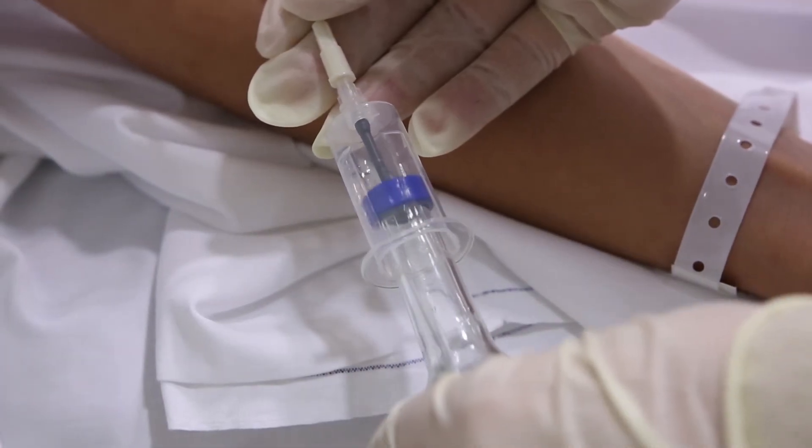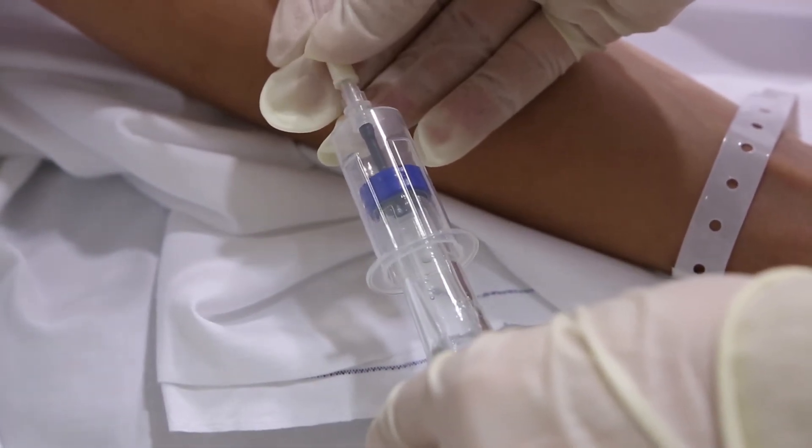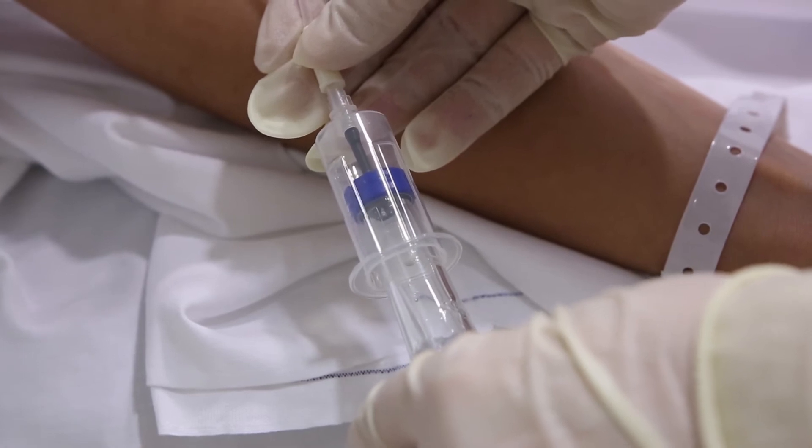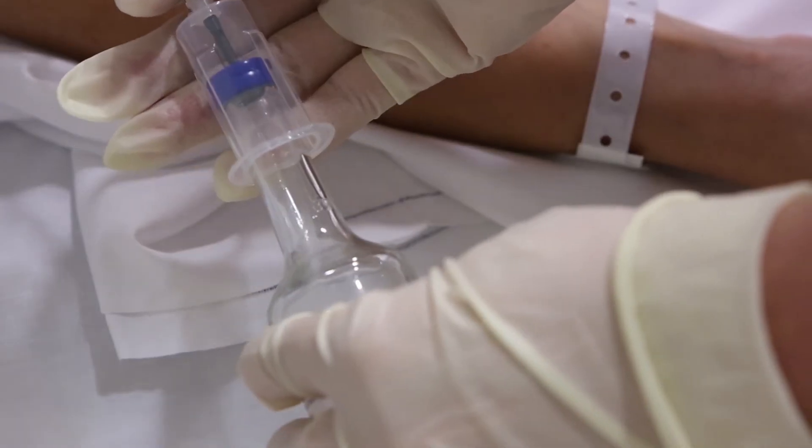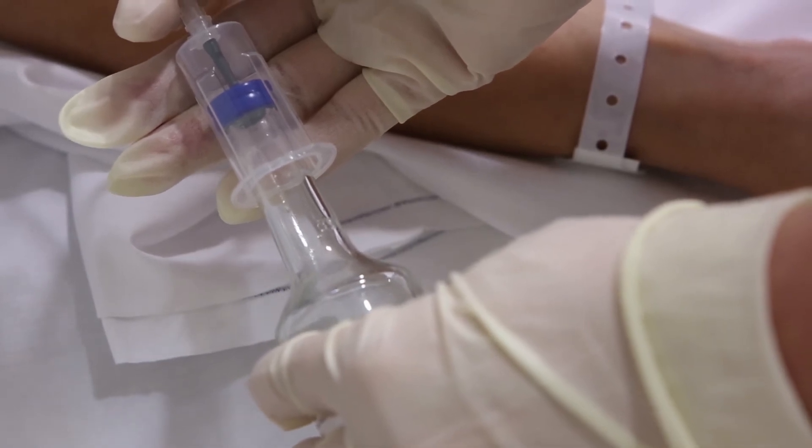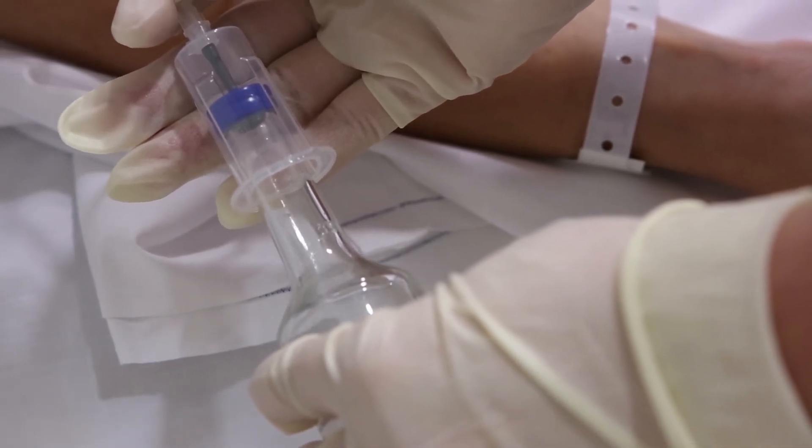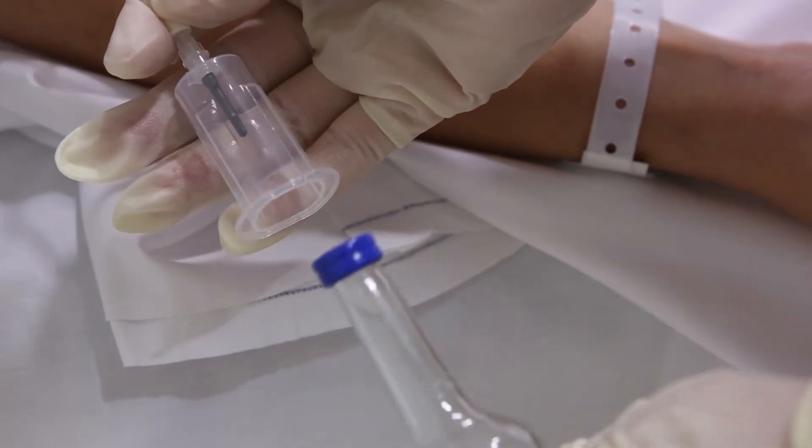Next, fill the blood culture bottles by inoculating the aerobic bottle first as most pathogenic organisms grow in aerobic conditions. Position the blood culture bottle as shown to ensure that the liquid contents do not reflux back into the patient which may lead to anaphylaxis.